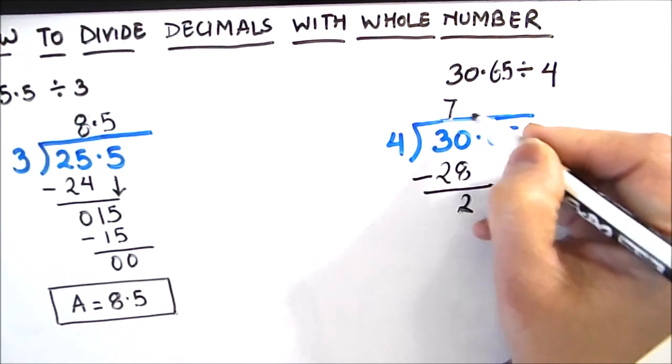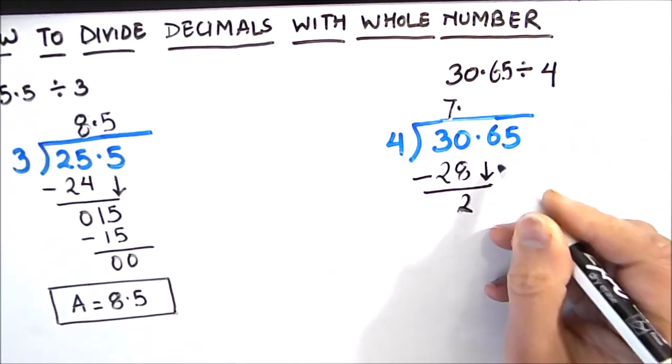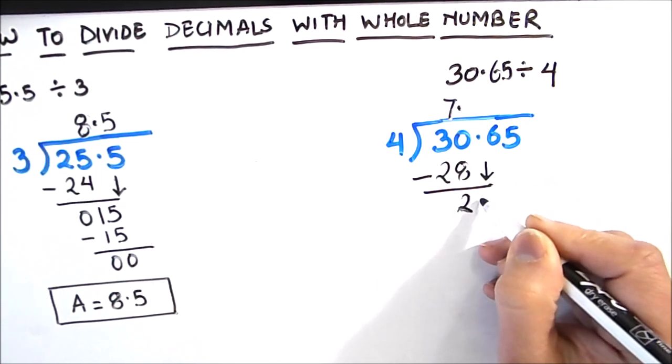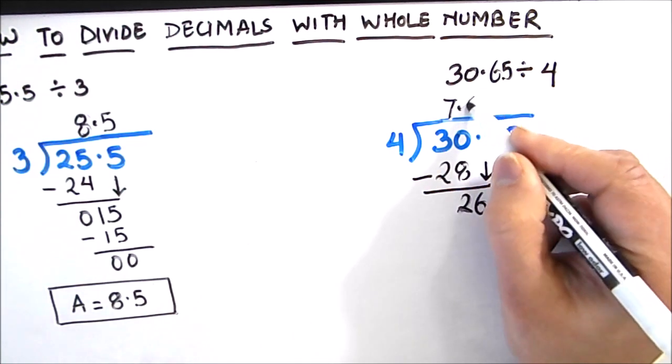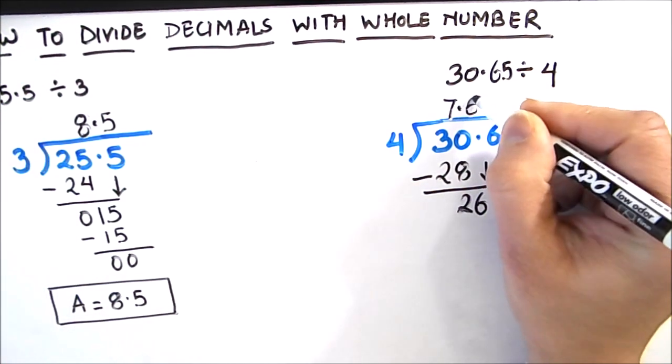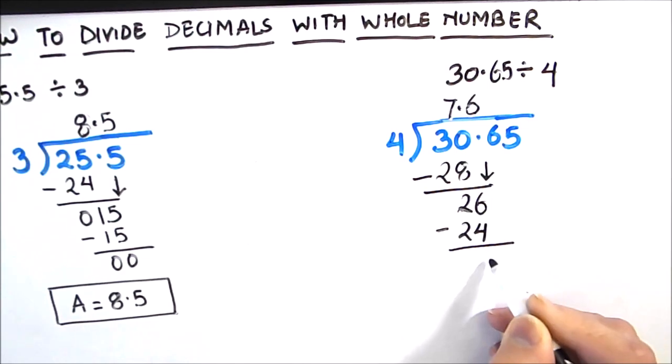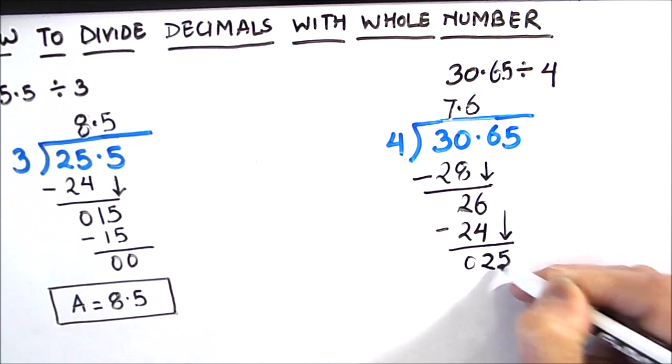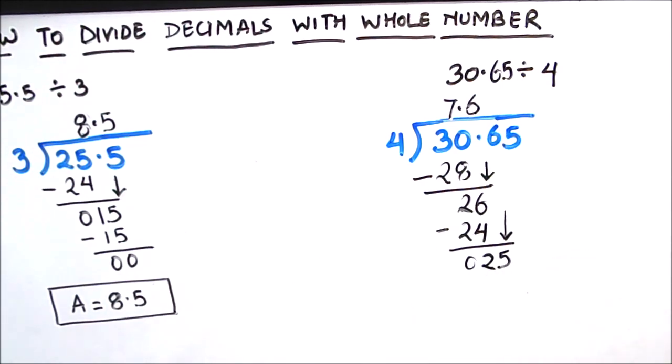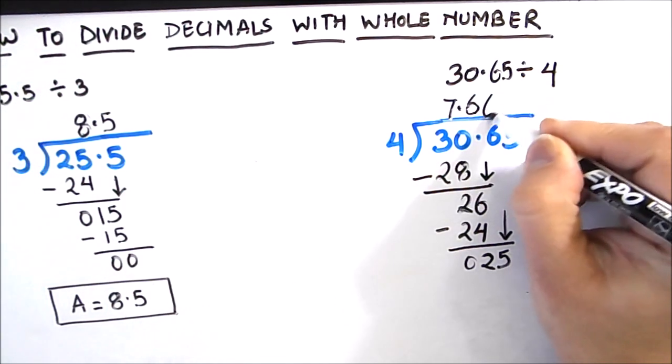Now we have the decimal point, so we will put the decimal point just above and drop down the next number which is 6. So our dividend is 26. Now we are dividing 26 by 4. We will count the tables of 4, 4 times 6 is 24. We will subtract the two numbers, 6 minus 4 is 2 and 2 minus 2 is 0. Now we will drop down the next number 5. We have 25 divided by 4, so 4 times 6 is 24.